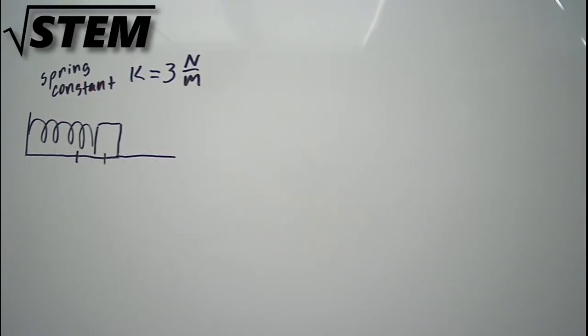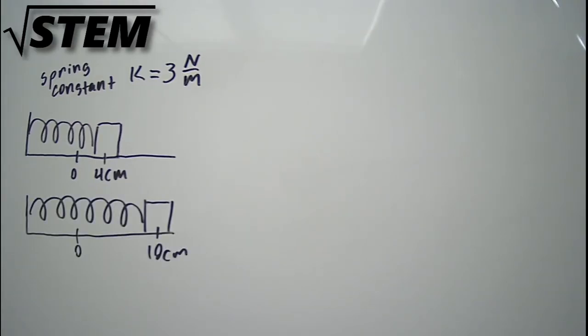Let's look at a block attached to the end of a spring, where the spring has a spring constant of 3 newtons per meter. To start, we'll hold the block at x equals plus 4 centimeters away from the resting position of the block. We're going to pull the block out to x equals plus 10 centimeters, and then release it.